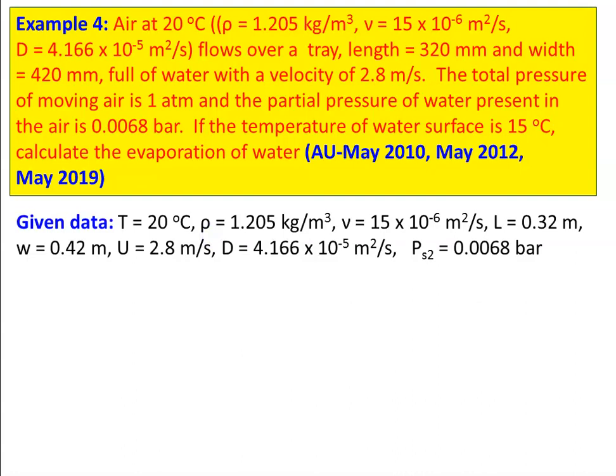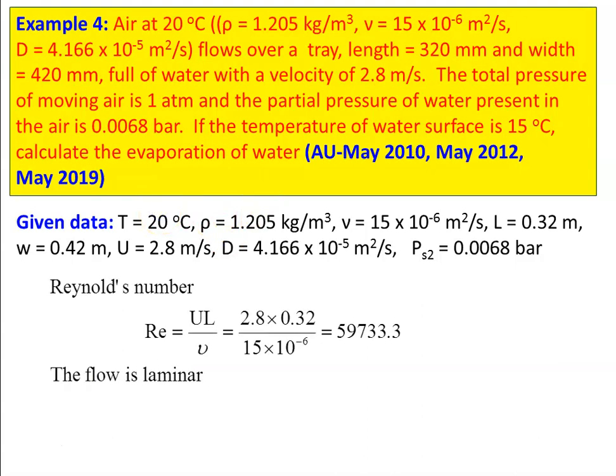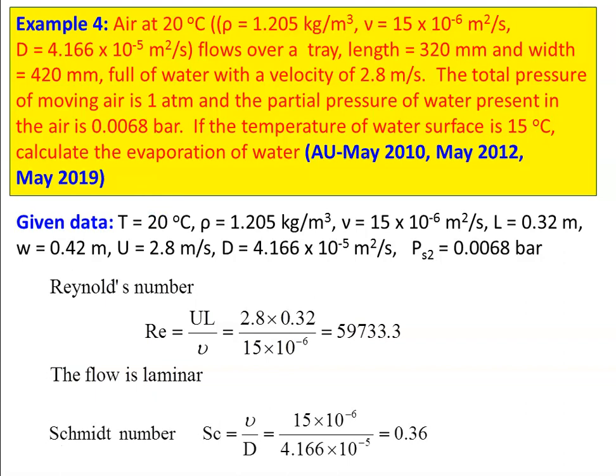Given data: T = 20°C, ρ = 1.205 kg/m³, ν = 15 × 10⁻⁶ m²/s, L = 0.32 m, width = 0.42 m, u = 2.8 m/s, D = 4.166 × 10⁻⁵ m²/s. Partial pressure of water vapor at the air temperature (20°C) is 0.0068 bar. Reynolds number Re = uL/ν = 59,733.3 — flow is laminar. Schmidt number Sc = ν/D = 15 × 10⁻⁶ / (4.166 × 10⁻⁵) = 0.36.